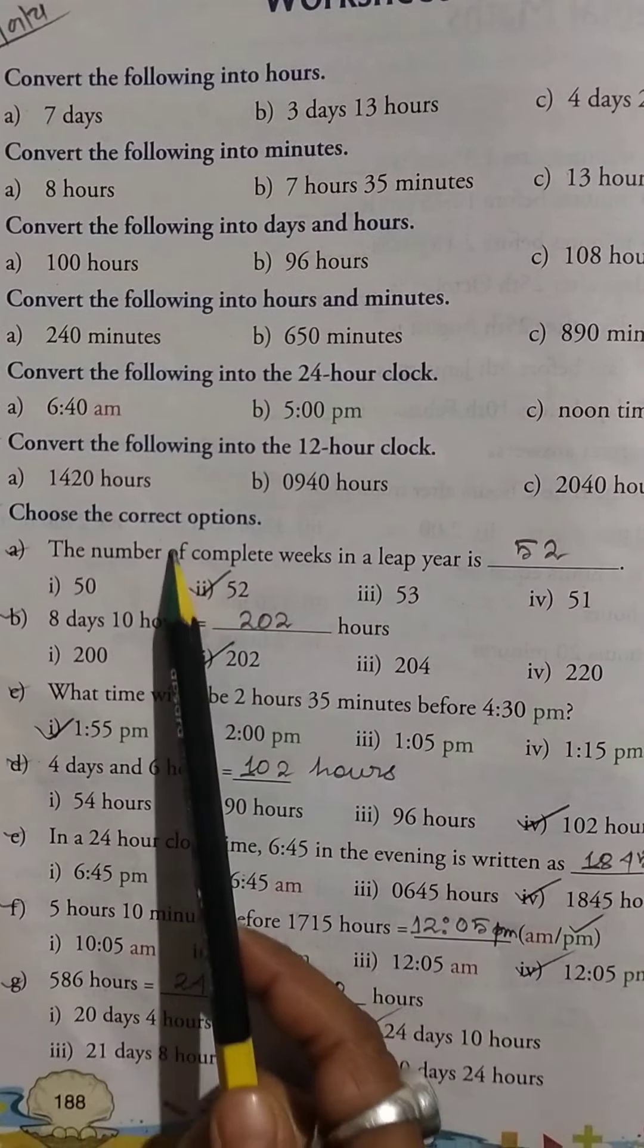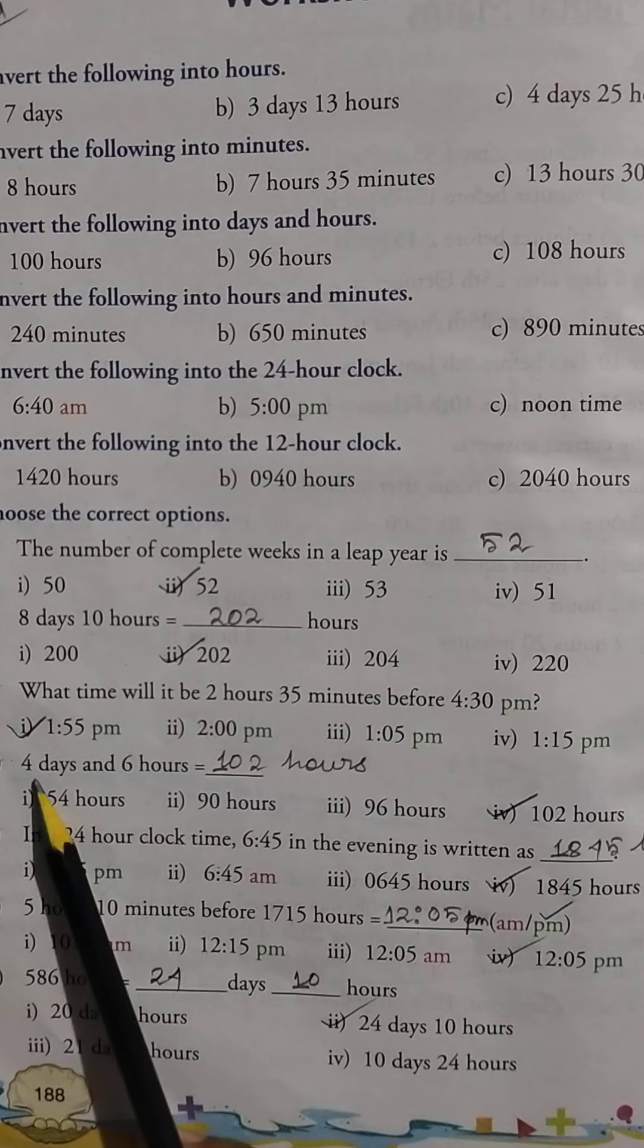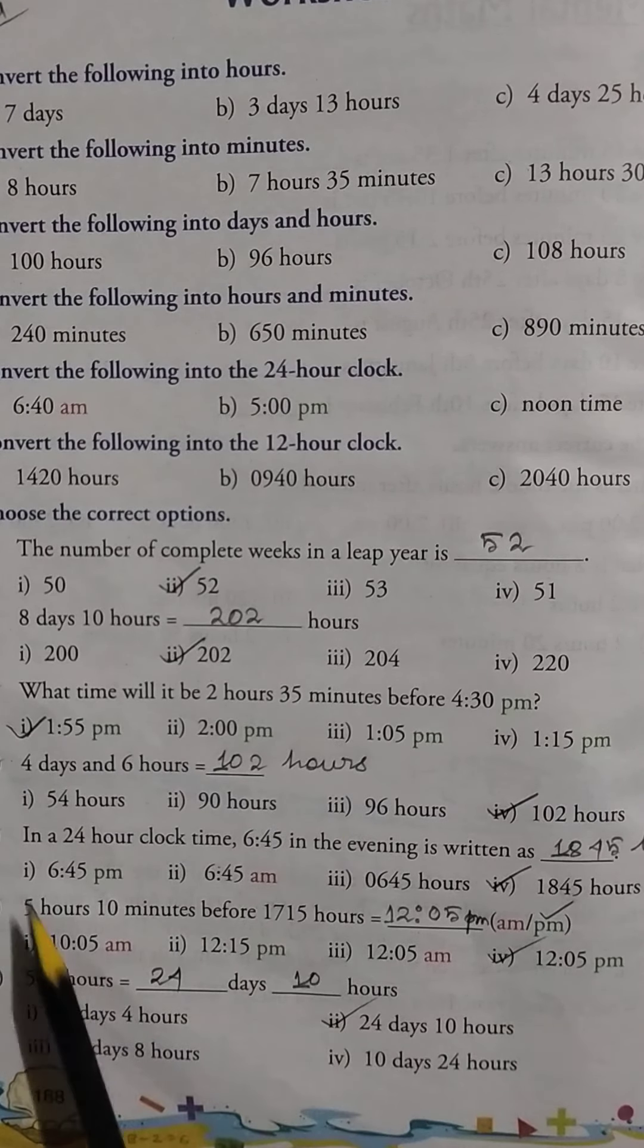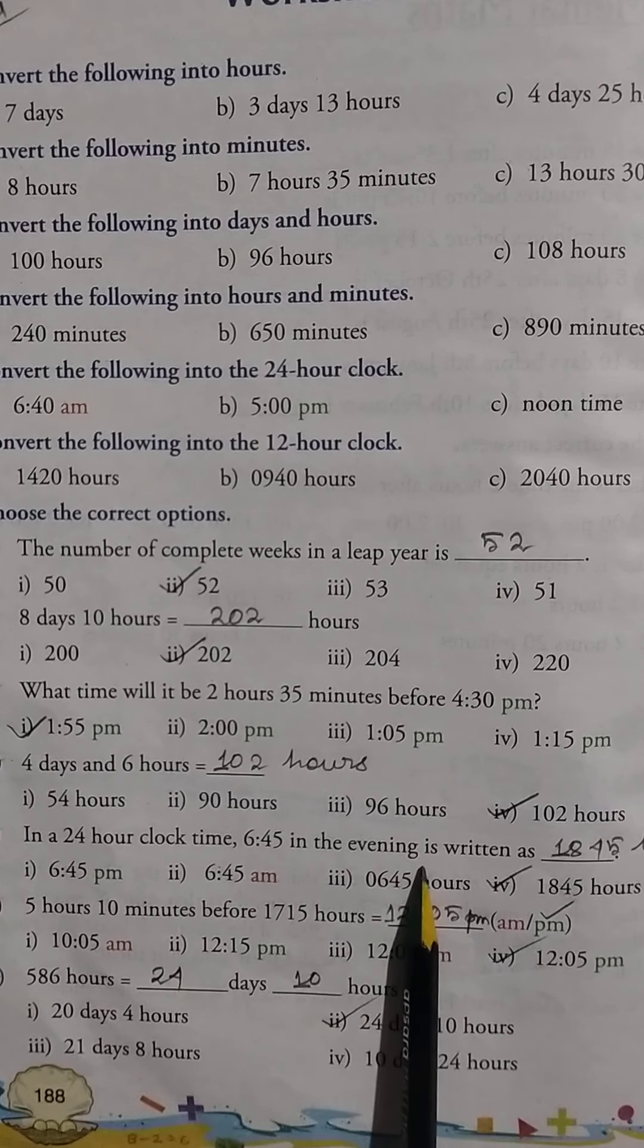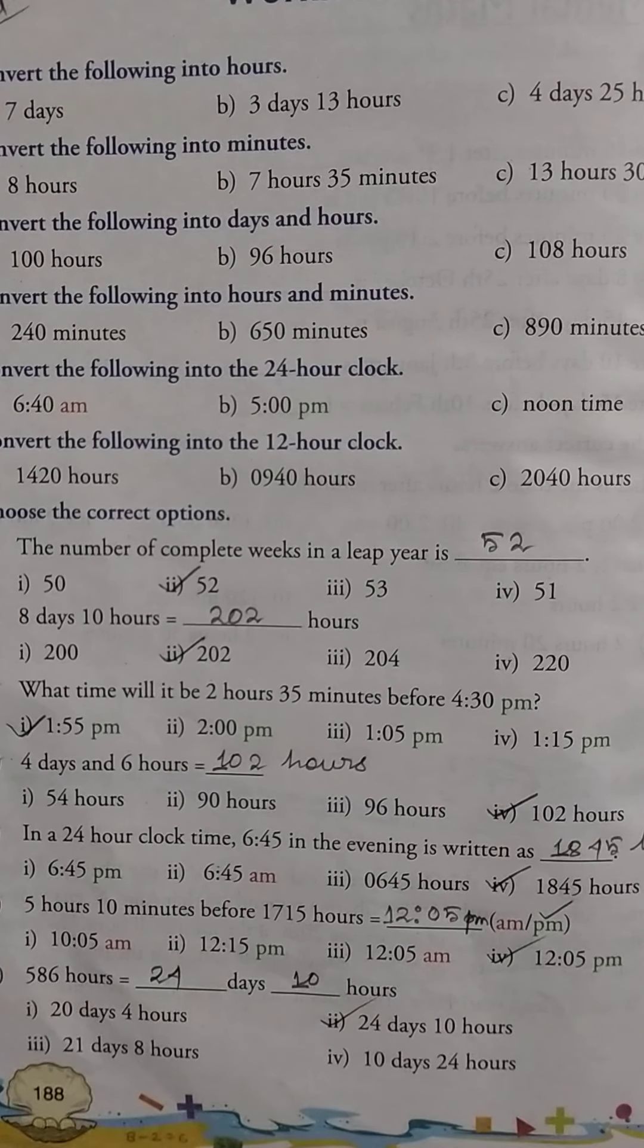4 days and 6 hours equals 102 hours. In 24-hour clock, 6:45 in the evening is written as 18:45 hours. 5 hours 10 minutes before 17:15 hours equals 12:05 pm.